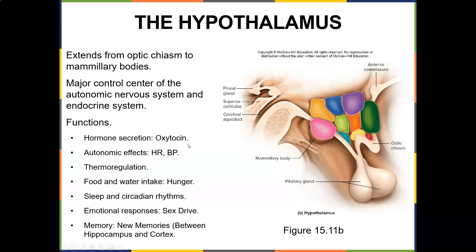The hypothalamus controls hormone secretion such as oxytocin, autonomic effects including heart rate and blood pressure, thermal regulation, food and water intake, hunger, sleep and circadian rhythms, emotional responses, sex drive, and the formation of new memories between the hippocampus and cortex. The hypothalamus is one of the most important aspects of your brain — know this inside and out.